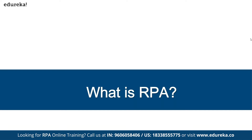So robotic process automation — let's break this into three different words: robotic, process, and automation. What is automation? Generally, automation is something which can be done without human intervention. If some work you would like to complete without human intervention — say with some kind of machines — you're trying to accomplish a particular task. That is your automation. Without human efforts, if you want to complete something, that is said to be automation.